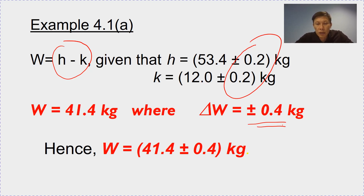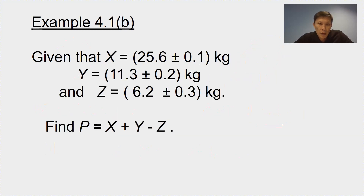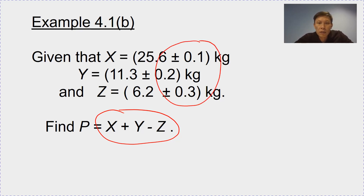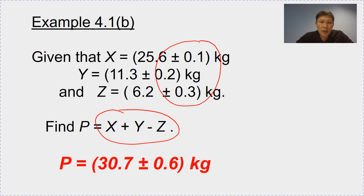For both addition and subtraction, you add up the uncertainty. Example 4.1B: if you have an expression involving addition and subtraction, the rules for both are the same. The final uncertainty is found by summing up the uncertainty of each of the quantities, and you will get 0.6.